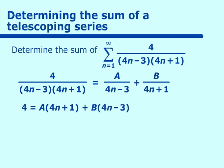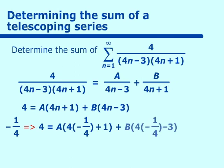Substituting in negative 1/4 for n, we get 4 equals A(4 times -1/4 + 1) plus B(4 times -1/4 - 3). The A term cancels out, so we get -4B equals 4, or B equals negative 1.